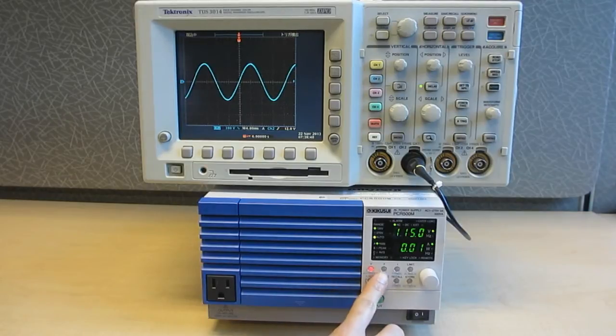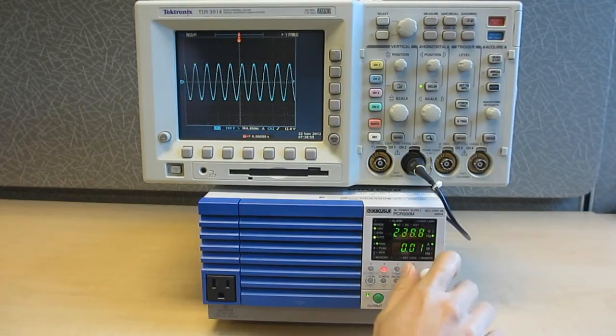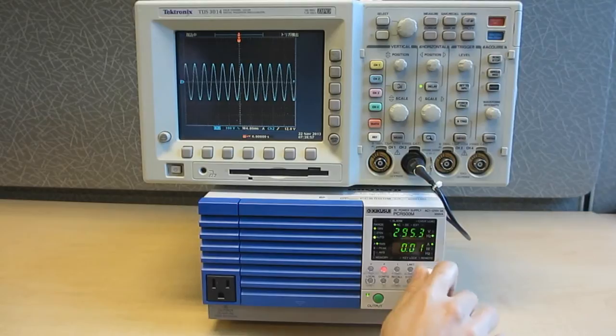Now we're going to show you the output voltage being set to 115V at 400Hz. As you can see, it's very easy to set the PCR-M for a variety of applications using the front panel.